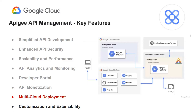Next comes multi-cloud deployment. Apigee API management can be deployed across various cloud environments, including Google Cloud, AWS, or Microsoft Azure. This flexibility allows organizations to leverage Apigee's capabilities in different cloud environments, ensuring scalability and adaptability in their API management strategy.